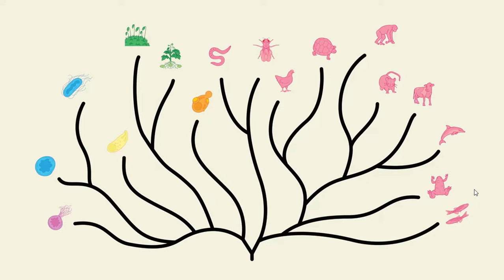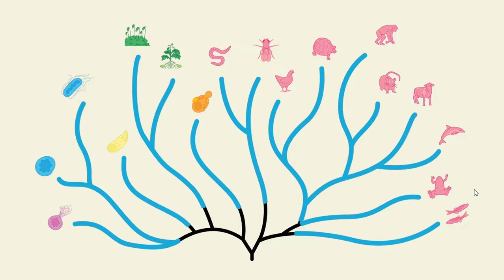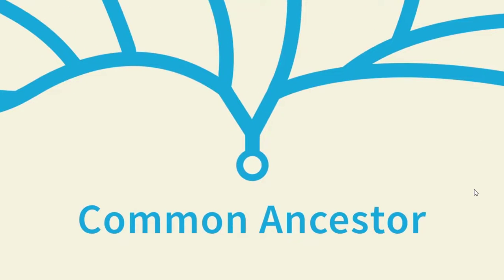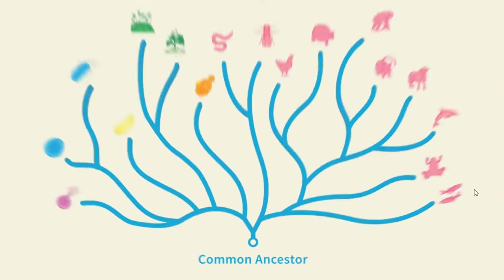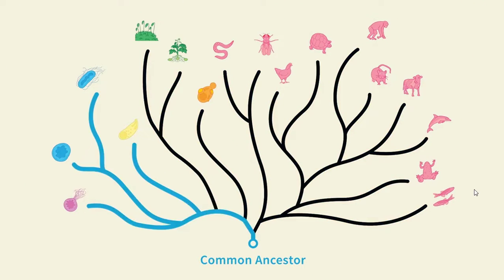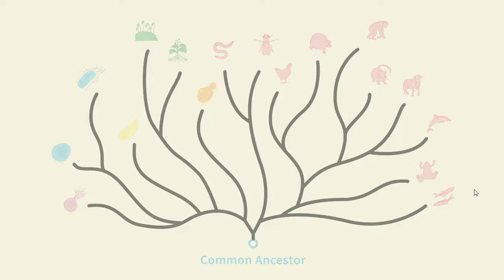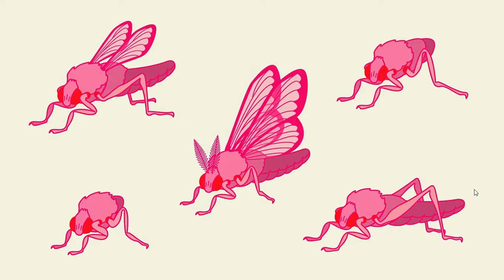Since living things share so many fundamental characteristics, the underlying assumption is that they all descended from a common ancestor. And the branches are a best guess at how the living things at the tips are related through reproductive lineages. To show the general idea of how tree diagrams work, let's organize this group of imaginary creatures.